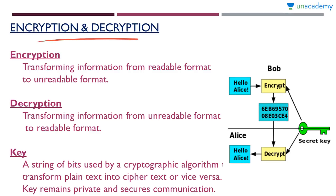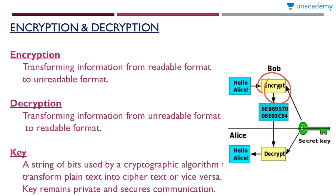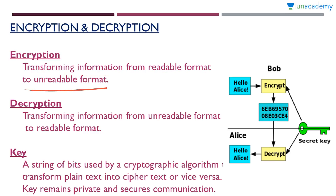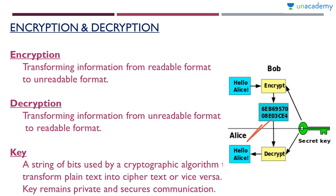Now let's look at encryption and decryption. In our scenario, Bob was not just sending the message directly — he encrypted the message before sending, and Alice decrypted it before reading. Encryption is transforming information from a readable format to an unreadable format. 'Hello Alice' is changed into the encrypted code — that is encryption. We are locking the information so that only the intended receiver can see it, and not the attackers. Decryption is transforming information from an unreadable format back to a readable format — that is decryption.